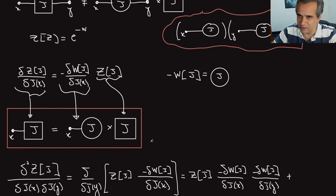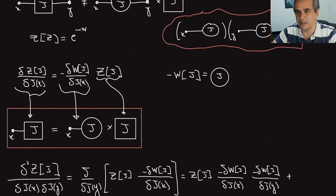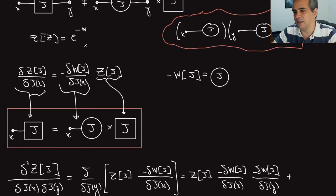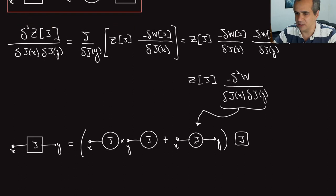There is an analogy with statistical mechanics here: Z[J] is the analogue of the partition function, and W[J] is the analogue of the free energy. In our case, the free energy leads to more important quantities than the partition function itself.